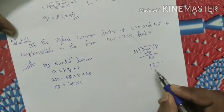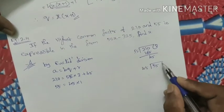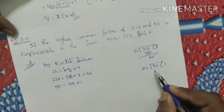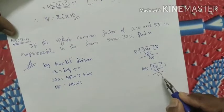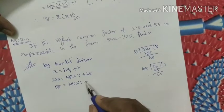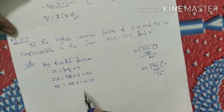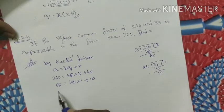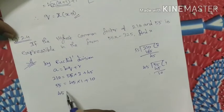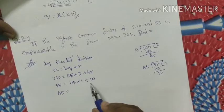55 divided by 45 gives one time with remainder 10. So 55 equals 45 into 1 plus 10. The remainder is 10, which is not zero, so we continue the process. Now 45 becomes the new dividend and 10 is the divisor.